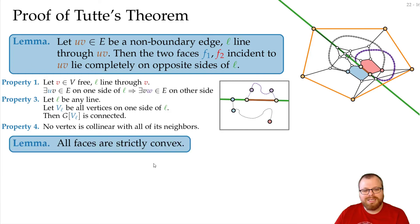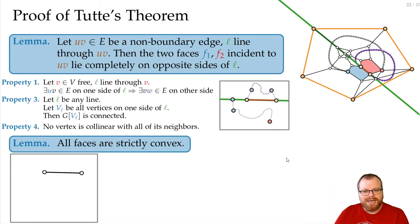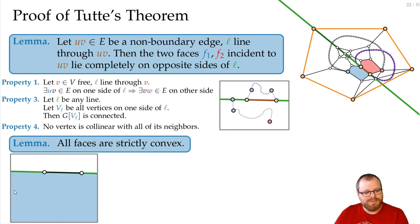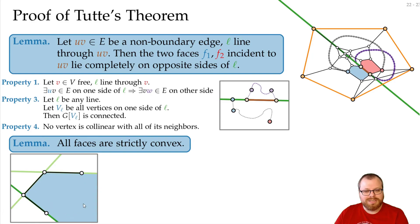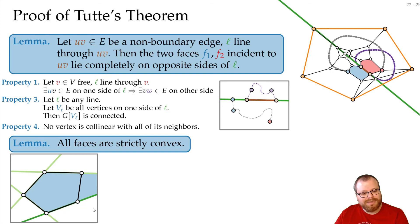With that lemma we immediately get that all faces are strictly convex. For a single edge, we take the line through it — one face lies above, one below. All vertices of the lower face must lie strictly below. Taking the next edge and its line, the remaining vertices are confined to a smaller region, and so on. Continuing around the face, at no point can we make an angle larger than 180 degrees, so every face is strictly convex.